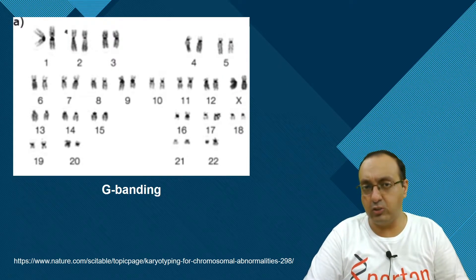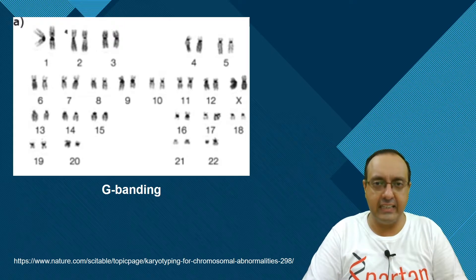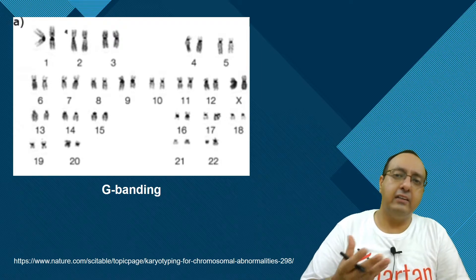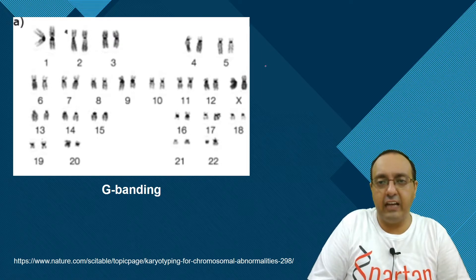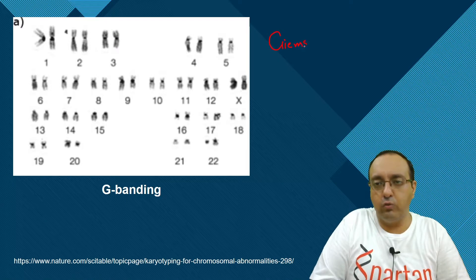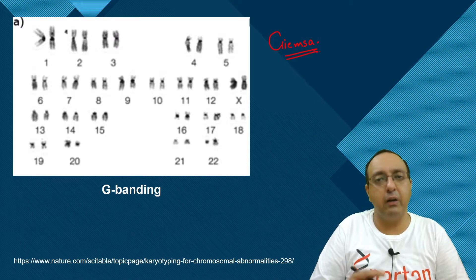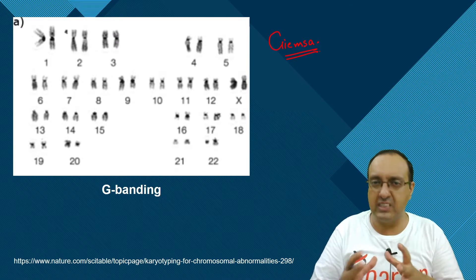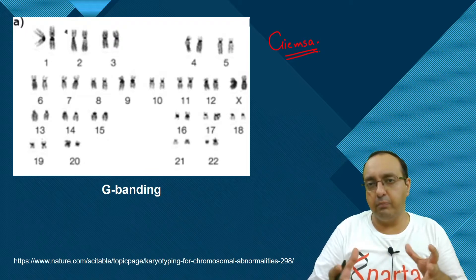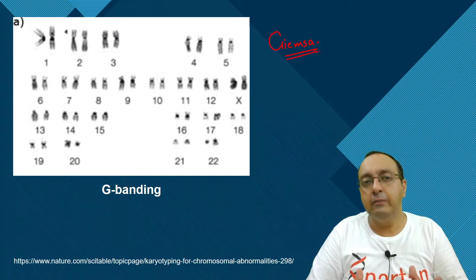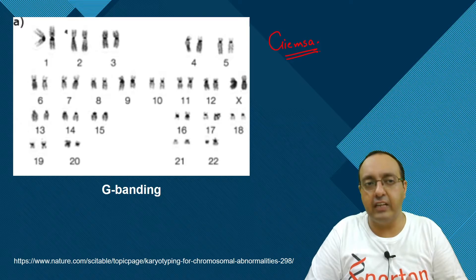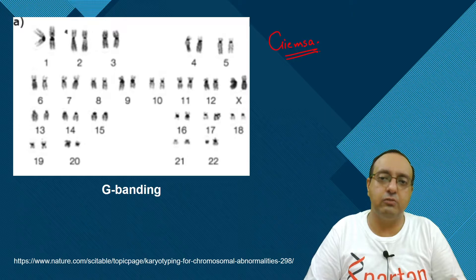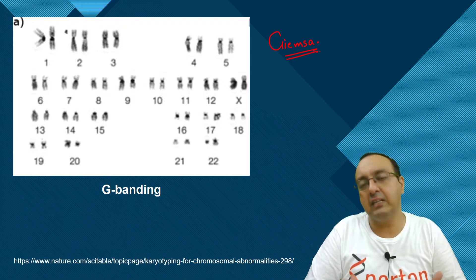Here is the G-banding technique. Many different banding techniques were developed after Tjio and Levan's paper, and G-banding was one of the first. Using the dye Giemsa, we treat the chromosomes with trypsin, which loosens them up by protease treatment, and then use the Giemsa dye to stain regions of DNA that are termed Giemsa-positive, or G-positive; regions that do not stain are named Giemsa-negative.